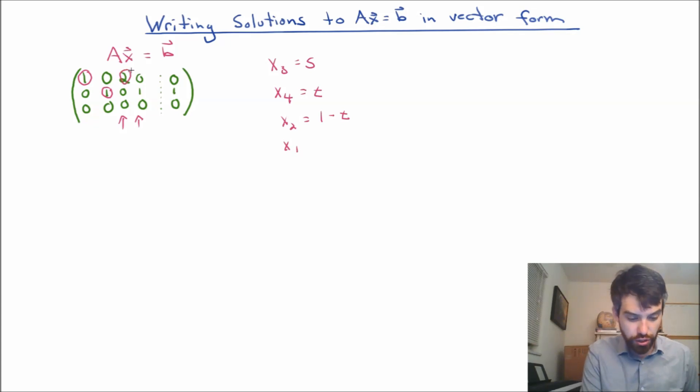And my x1, I'm going to take the 2 that I have here, and I'm going to move that to the other side as well. I have a 0, but then it is minus 2 times x3, or minus 2s. Okay, so that was all review from before, but here's what my slight change is.